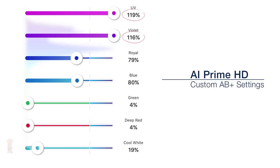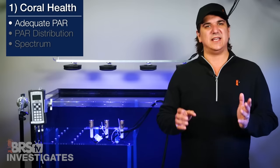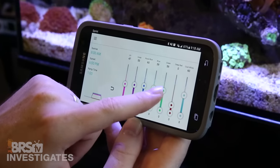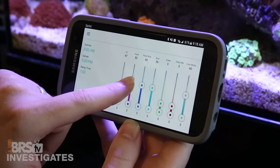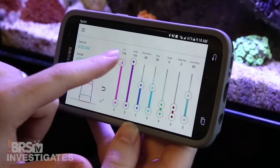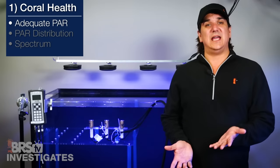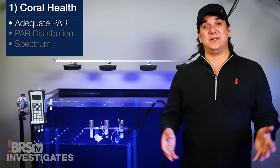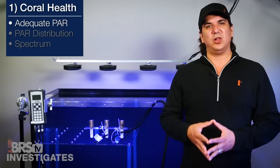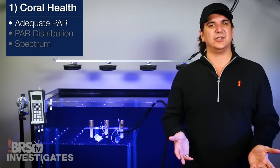You will notice that the top two are set at over 100 percent which might seem odd but that is one of the benefits of AI's HD system. If you under drive some channels it allows you to divert the power to other channels which is kind of a neat feature. So repeating the same test with the new settings, the PAR will be significantly lower but a bit closer to some settings reefers will actually use.